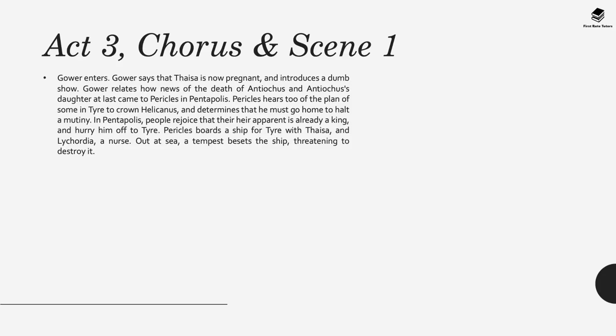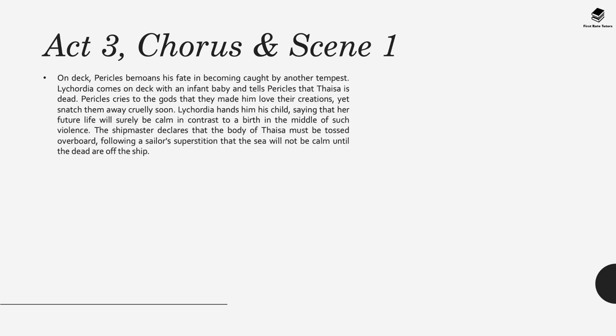In Act 3, Gower enters again and says that Thaisa is now pregnant, and introduces a dumb show. He relates the news of the death of Antiochus and his daughter, which came to Pericles in Pentapolis. Pericles hears of the plan to crown Helicanus in Tyre and determines he must go home. People in Pentapolis rejoice and hurry him off. Pericles boards a ship for Tyre with Thaisa, the nurse Lycordia, and out at sea a tempest besets the ship. Lycordia comes on deck with an infant and tells Pericles that Thaisa is dead. Pericles cries to the gods that they made him love their creations yet snatch them away too soon.